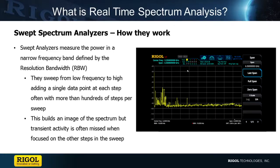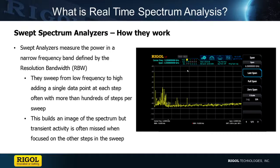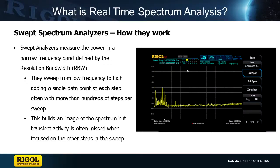A swept spectrum analyzer captures the amount of power detected in a small frequency span called the resolution bandwidth. It will post this power to the display and then go on to the next span, capturing the power in the signal often hundreds of times as the frequency being measured moves across the display. This creates accurate measurements but can miss events that occur in one frequency when a different frequency was being evaluated.